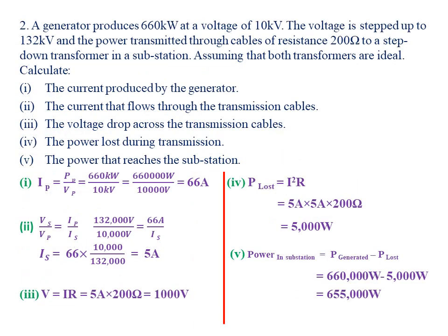Our second example reads: a generator produces 660 kilowatt at a voltage of 110 kilovolts. The voltage is stepped up to 132 kilovolts and the power is transmitted through cables of resistance 200 ohm to a step-down transformer in a substation. Assuming both transformers are ideal, calculate part A: the current produced by the generator.